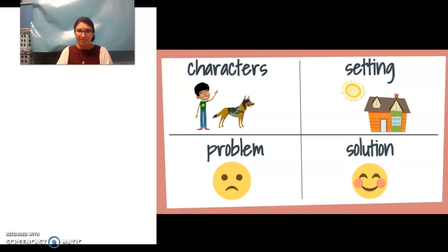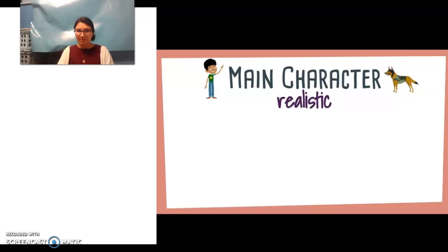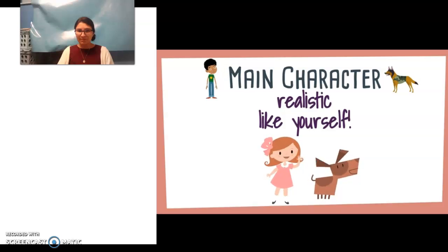Then we will add more details when we actually start writing the story later. So first, I need to think about the main character in my story. Characters are the people and animals in a story. Remember, the characters should be realistic. Sometimes it helps to make the character kind of like yourself. I think I will write about a little girl and her dog. I will name them Mary and Sam.